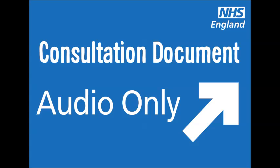How will organisations write down or record people's information or communication needs? As part of the standard there will be a list of types of communication support and information format which people need. Organisations will need to use this list to record people's needs, to make sure that everyone records things in the same way. We think that organisations should record people's information or communication needs and not their disability. We think that the list of needs should include four different types of need, which could be called headings.